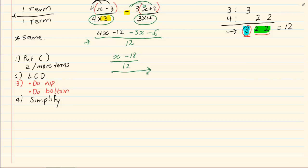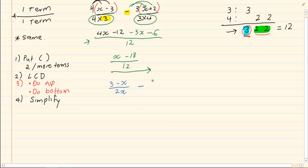Let us do the following example: 3 minus x over 2x minus 4x minus 5 all over 5x.